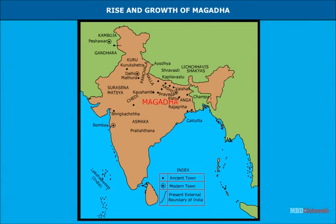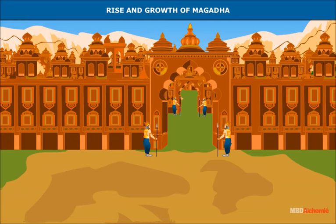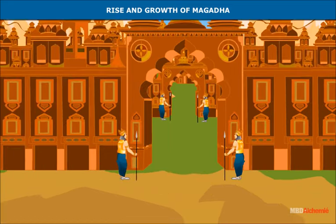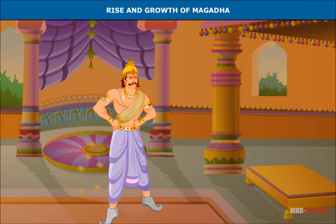Magadha came into prominence under the leadership of Bimbisara. His capital was Rajgira, modern Rajgir. He became the king of Magadha in about 545 BC.